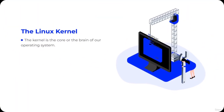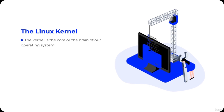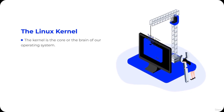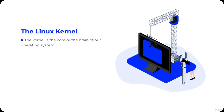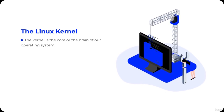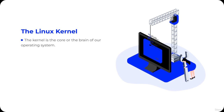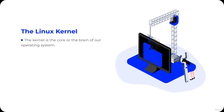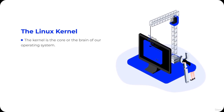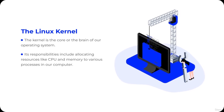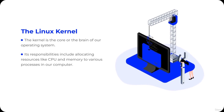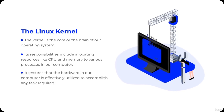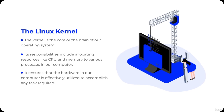The kernel acts as the middleman between the hardware and the software within our system. The kernel's responsibilities include allocating resources like CPU time and memory to various processes, as well as managing requests from the shell or other applications. In essence, it ensures that all the hardware in our computer is effectively utilized to accomplish any task required by our commands or applications.